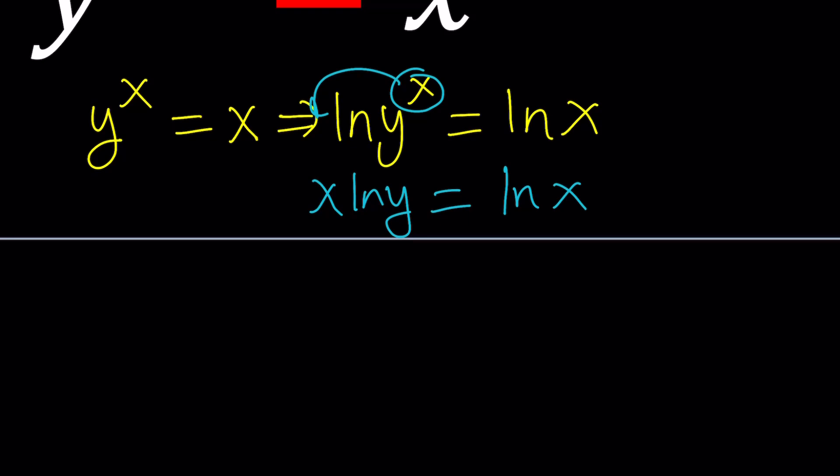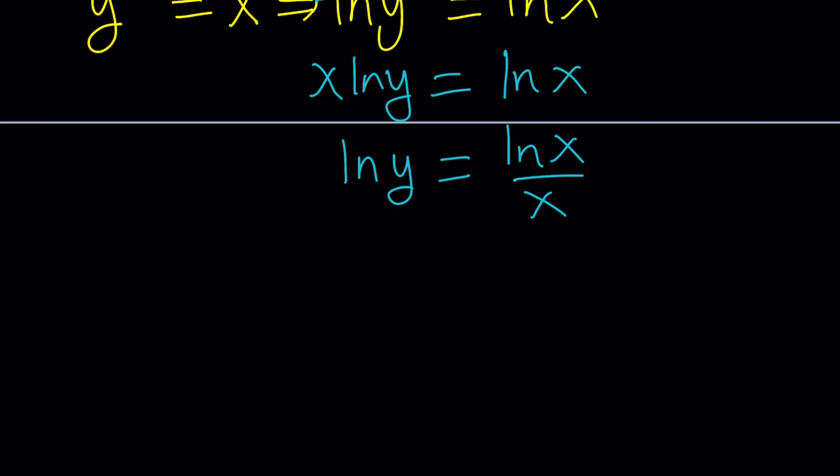Now we can go ahead and move the x to the front. That gives us x ln y under certain conditions equals ln x. And then from here, our goal should be to solve for y because we're going to be differentiating it. Let's isolate ln y from here. That can be written as ln x over x. Great. Now at this point, we can do e to the power of both sides. That gives us y equals e to the power ln x over x.